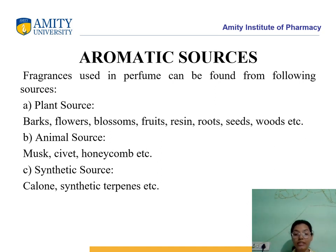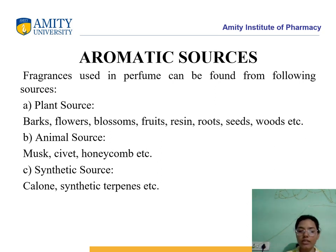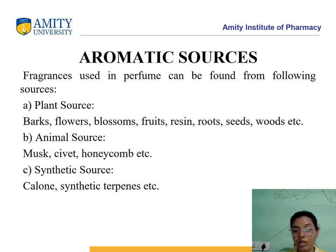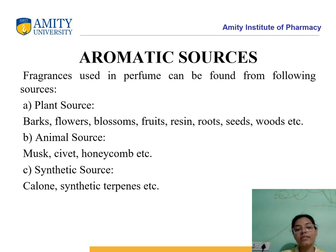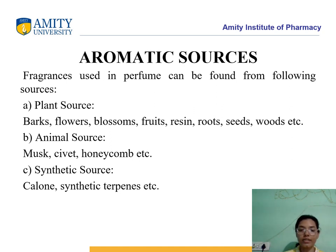What are the basic aromatic sources utilized in making perfume? There are three sources. First, plant sources, which include the bark, flowers, blossoms, fruits, resins, roots, seeds and wood of trees. Second, animal sources, which include musk, civet, honeycomb, etc. Third, synthetic sources, which include calone or synthetic terpenes for fragrance purposes.